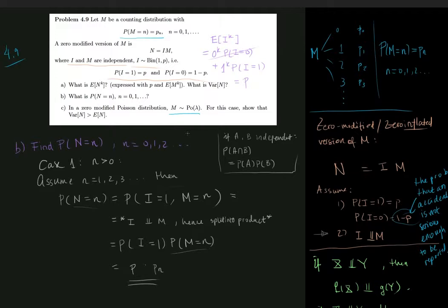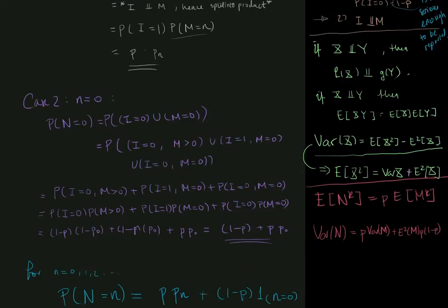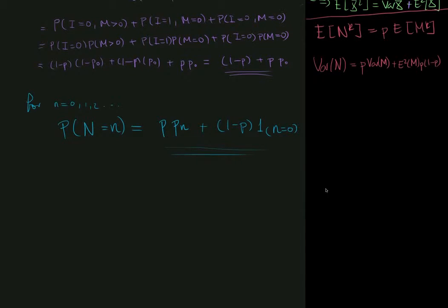In this case, we're asked to show that the variance of n, the zero modified version, is strictly greater than the expected value. So let's do that. Just draw a line down here, so we'll do that down here.